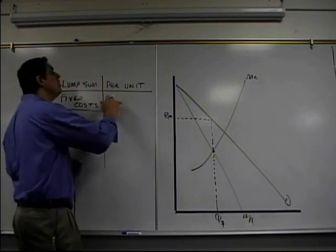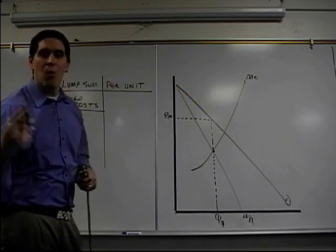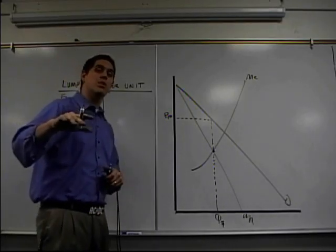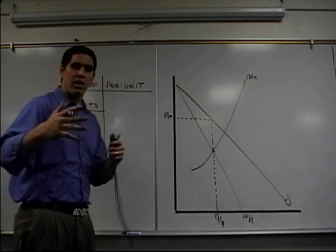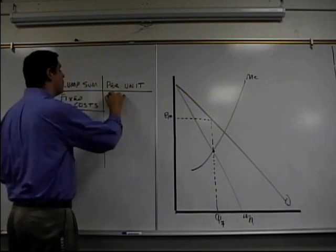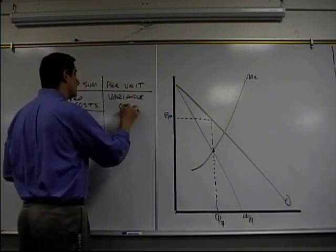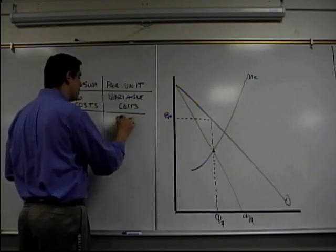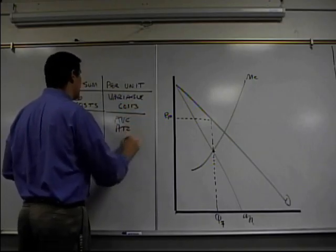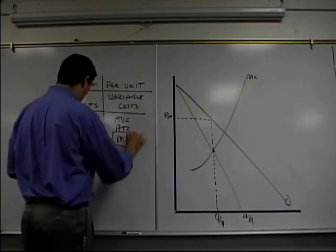Over here, per unit subsidy is like a $1 subsidy on every single unit produced. So if you produce another unit, $1 subsidy. And so it's going to affect your variable cost. So as this affects your variable cost, it's going to affect your average variable cost, your average total cost, and most importantly, your marginal cost.